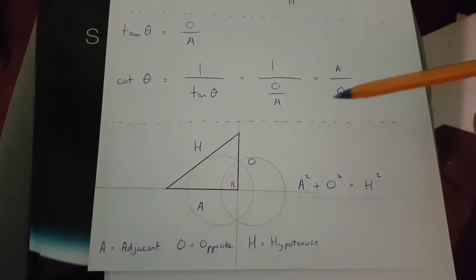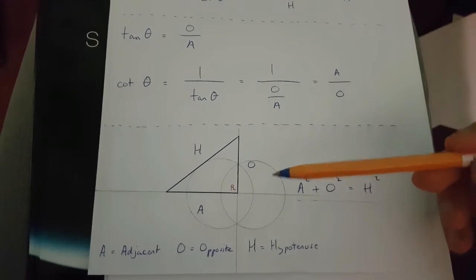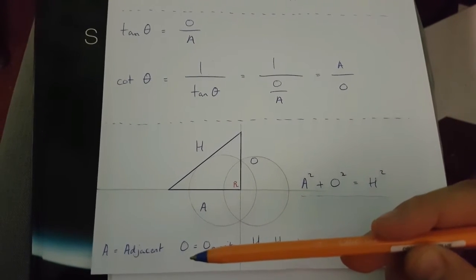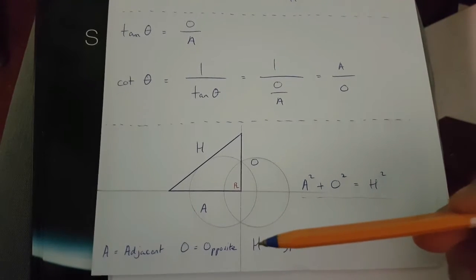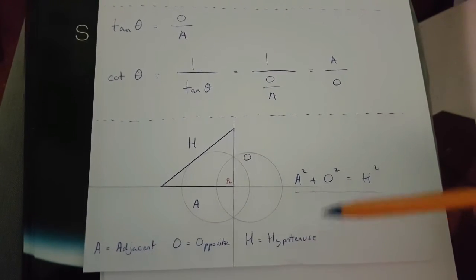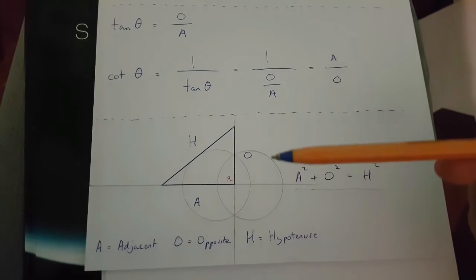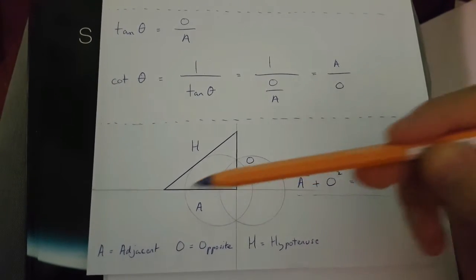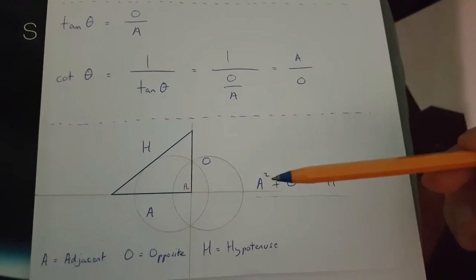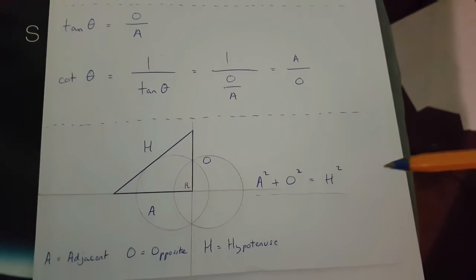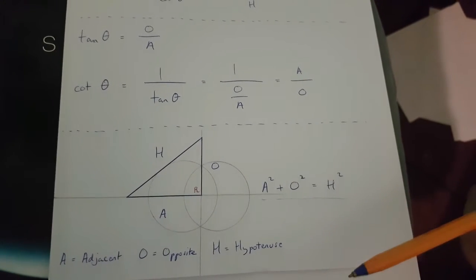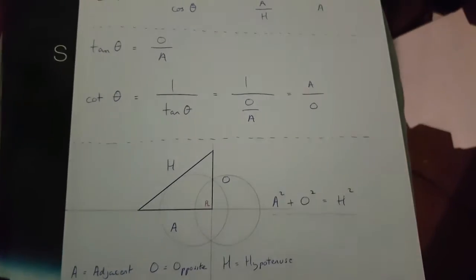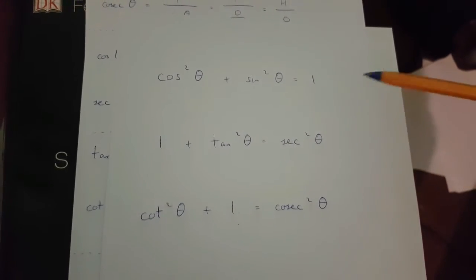Over here I've created a diagram. In it, A stands for the adjacent length of this right-angled triangle, O stands for its opposite length, and H stands for the length of the hypotenuse. Because this is a right-angled triangle, A squared plus O squared should be equal to H squared. This is Pythagoras' theorem. It is this formula we are going to use to come up with these three trigonometric identities from scratch.